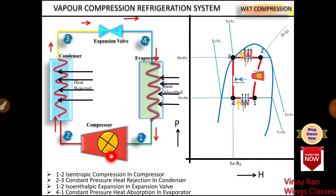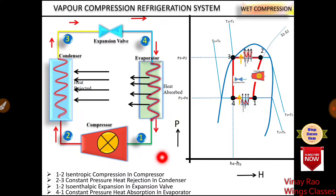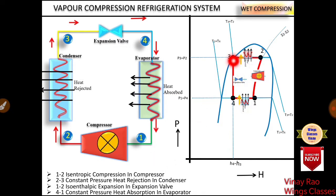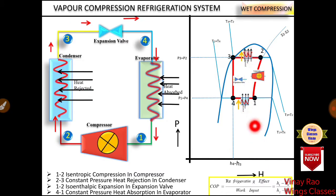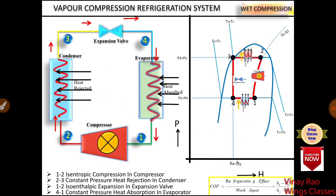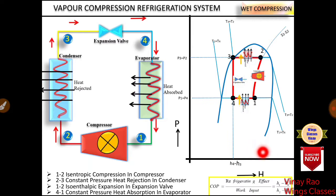Note: there is a misprint in the video — the correct labeling is: 1 to 2 is isentropic compression in the compressor, 2 to 3 is constant pressure heat rejection in the condenser, 3 to 4 is the isoenthalpic process in the expansion valve, and 4 to 1 is constant pressure heat absorption in the evaporator. The COP equals refrigerating effect divided by work input. Refrigerating effect is H1 minus H4, and work input in the compressor is H2 minus H1.